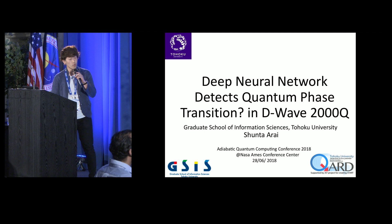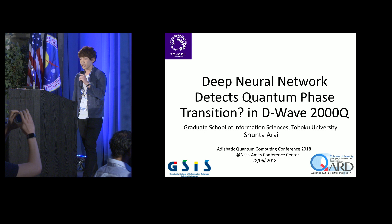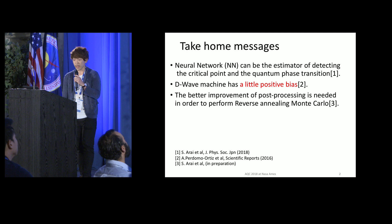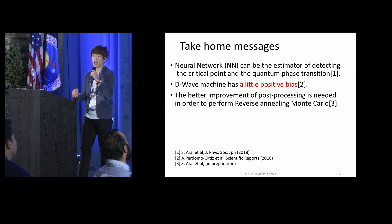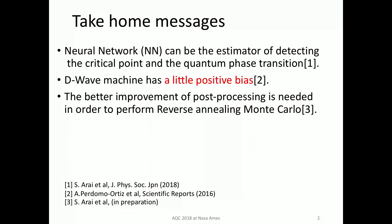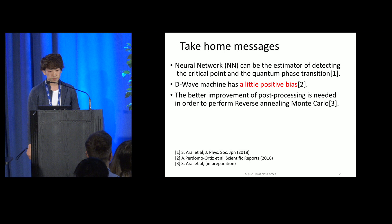First of all, I will tell you the take-home messages. The first one is: neural network can be a good estimator for detecting the critical point under quantum phase transition. If we don't know the parameter of the model we treat, how do we estimate the critical point? This result may lead to the solution of that.